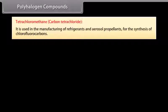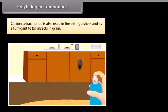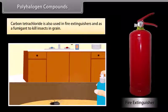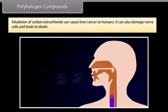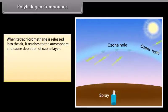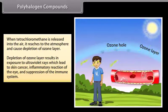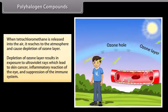Tetrachloromethane, carbon tetrachloride. It is used in the manufacturing of refrigerants and aerosol propellants for the synthesis of chlorofluorocarbons. Carbon tetrachloride is also used in fire extinguishers and as a fumigant to kill insects in grain. Inhalation of carbon tetrachloride can cause liver cancer in humans. It can also damage nerve cells and lead to death. When tetrachloromethane is released into the air, it reaches the atmosphere and causes depletion of ozone layer. Depletion of ozone layer results in exposure to ultraviolet rays, which leads to skin cancer, inflammatory reaction of the eye, and suppression of the immune system.